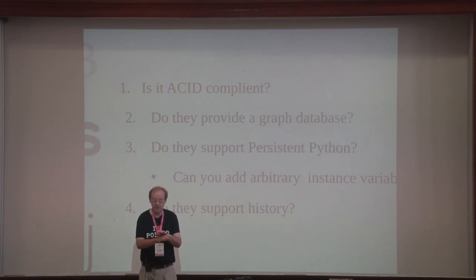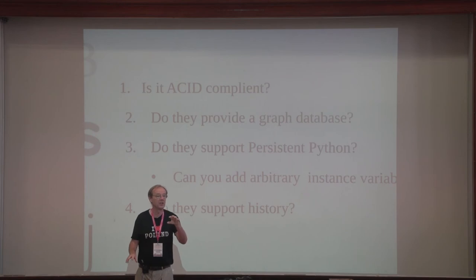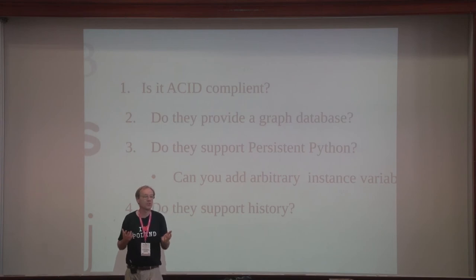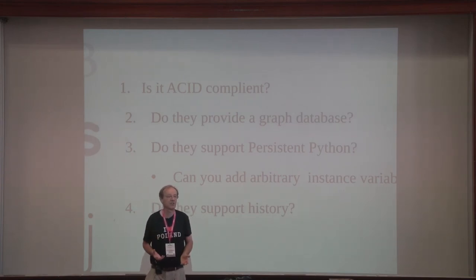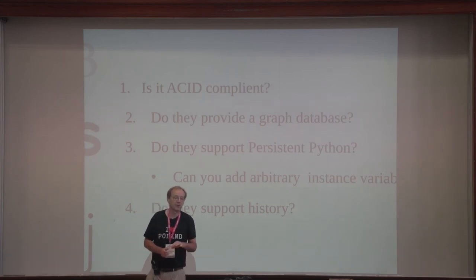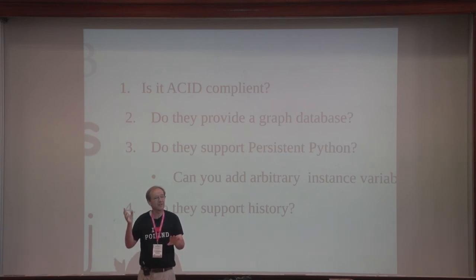That's a really good question. Typically people have relational databases and a Python object model, so they end up with a relational model, an object model, and an ORM between the two. What we're saying is: just get rid of the relational model, get rid of the ORM, just do persistent Python. It simplifies your work so much — it reduces complexity, speeds development, brings down your costs, and allows you to do a much better service than your competitors. Maybe what we need is not an ORM but a ROM, so that you can make ZeoDB look like a relational database. That could be done — there are actually some Python libraries that kind of do that.